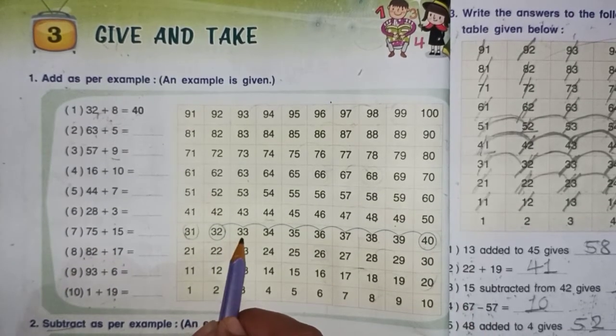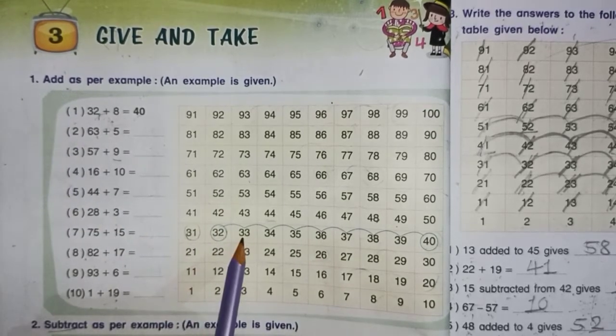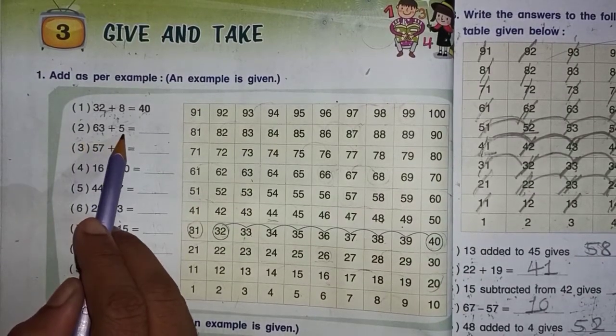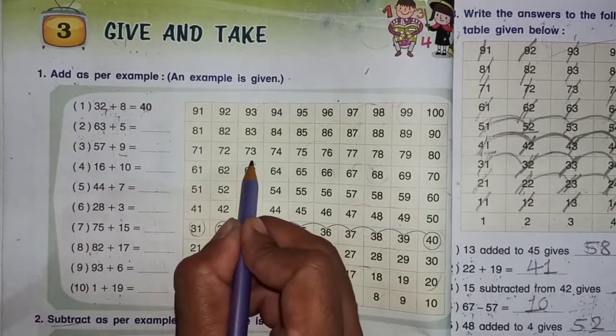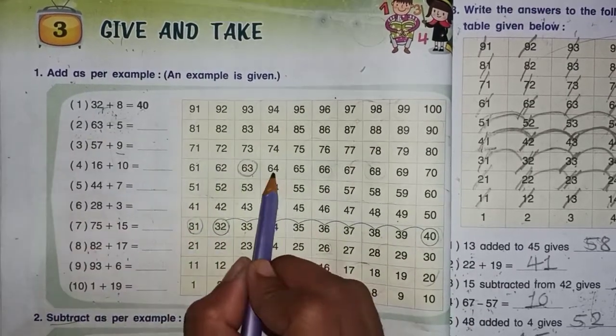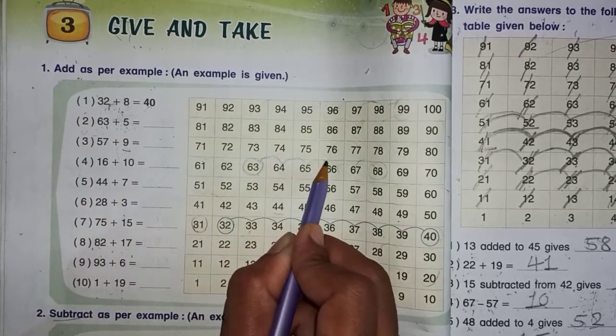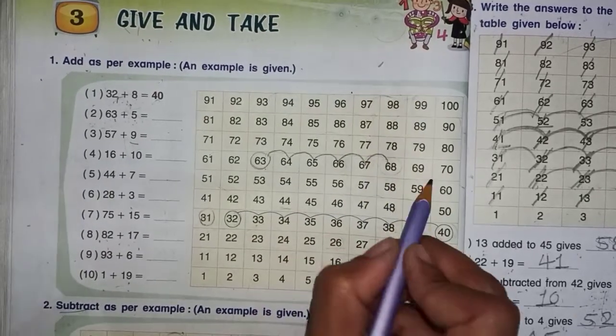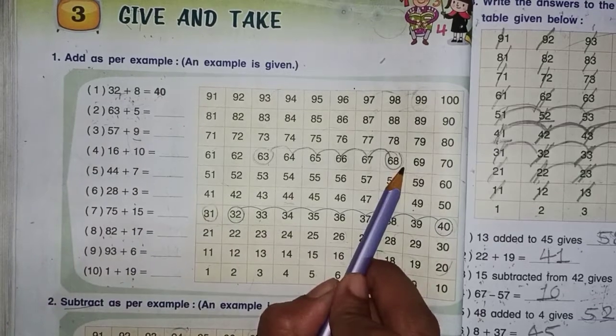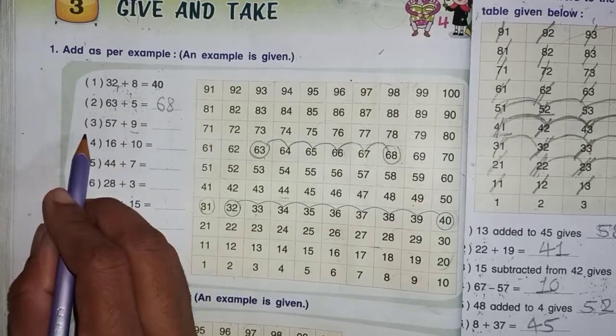Here we have a number of numbers, but we have to start with 32. After we add as per example, we have to do it. Second, 63 plus 5. We have to add as per example, counting 5 numbers. So 68 is the answer.